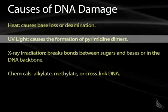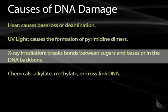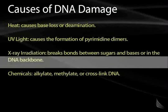Ultraviolet light causes the formation of dimers between two adjacent pyrimidine molecules, and this can be misreplicated to create a mutation. X-ray irradiation can break the bonds between sugars and bases, causing loss of bases, or can break the bonds between nucleotides in the DNA backbone, thus introducing mutations. There are also a whole host of chemicals that can modify nucleotides by alkylating, methylating, or cross-linking DNA, which also leads to mutations.